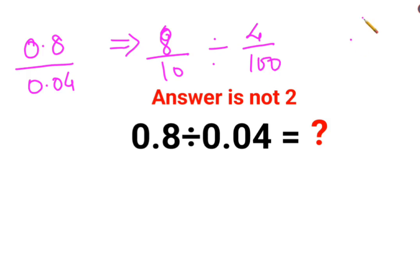When you have division, you need to follow the rule of KCF, where K stands for keeping the first number as it is, which is 8 upon 10. C stands for changing the division sign to multiplication. F stands for flipping or taking reciprocal of 4 upon 100, which is 100 by 4.